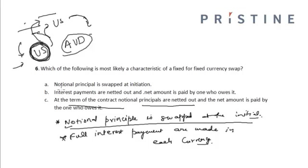Looking at the options: Option A says the notional principal is swapped at initiation — this is correct. The option stating that interest payments are netted out and the net payment is paid by the one who owes it is incorrect, because the full interest payments are made in each currency and at termination the notional payments are swapped again, not netted out. Hence the correct option is Option A.